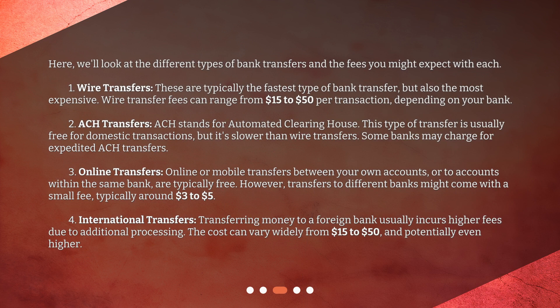Wire transfers: these are typically the fastest type of bank transfer, but also the most expensive. Wire transfer fees can range from fifteen dollars to fifty dollars per transaction, depending on your bank. Number two — ACH transfers. ACH stands for Automated Clearinghouse. This type of transfer is usually free for domestic transactions, but it's slower than wire transfers.